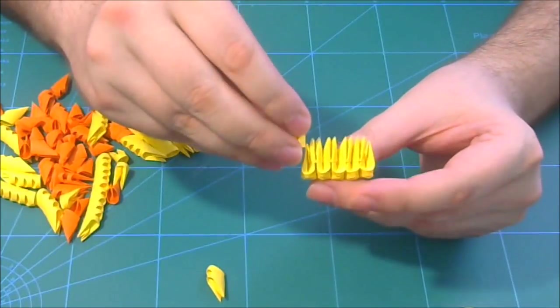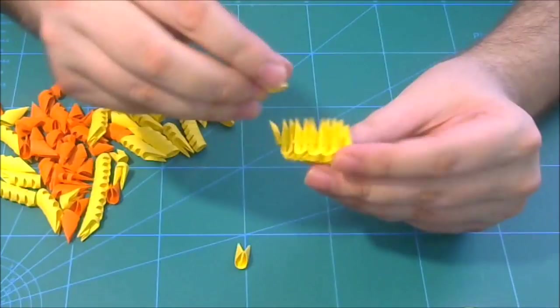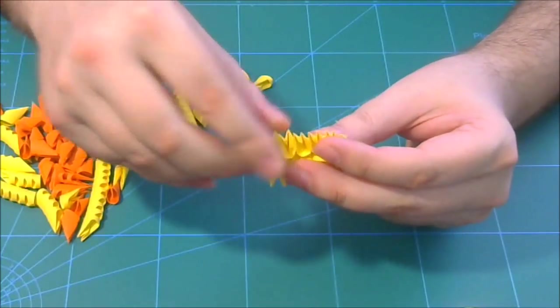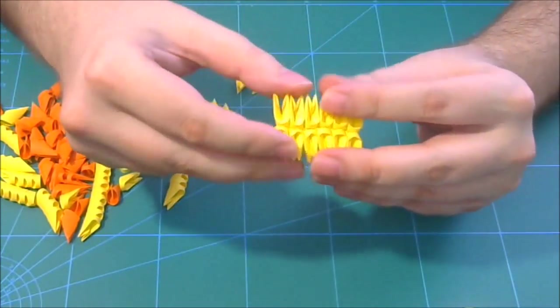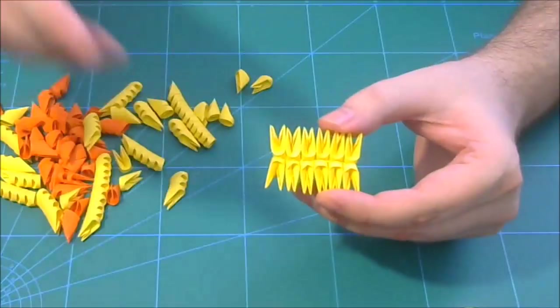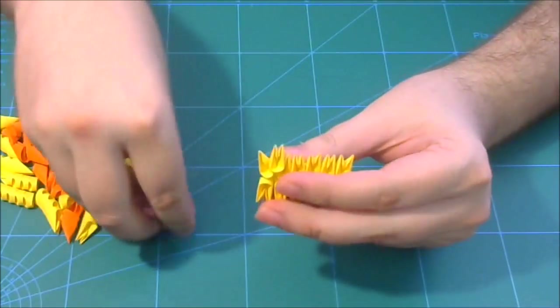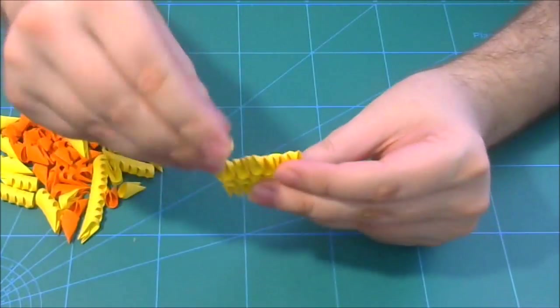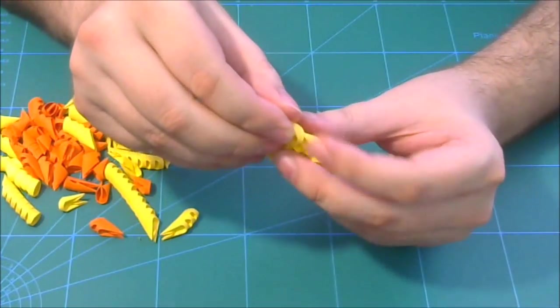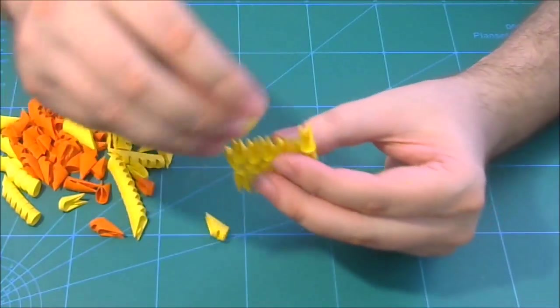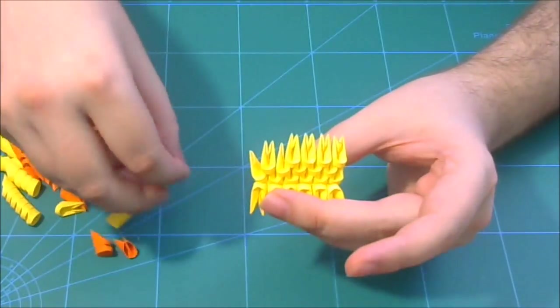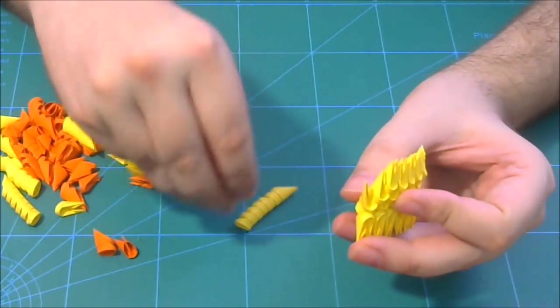Now we put one piece here, one pocket free. We repeat in the other part, and we have this. We put five pieces, and then six. We close here the row like this, and again I close the row.